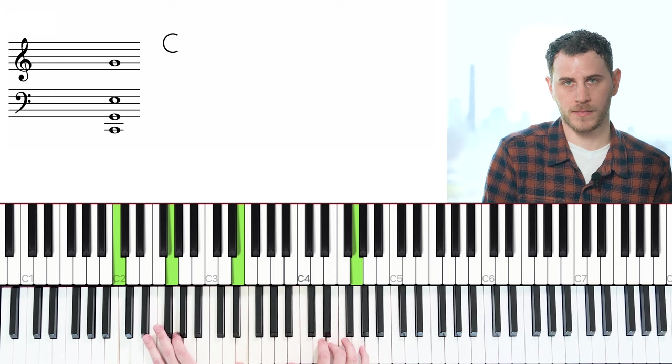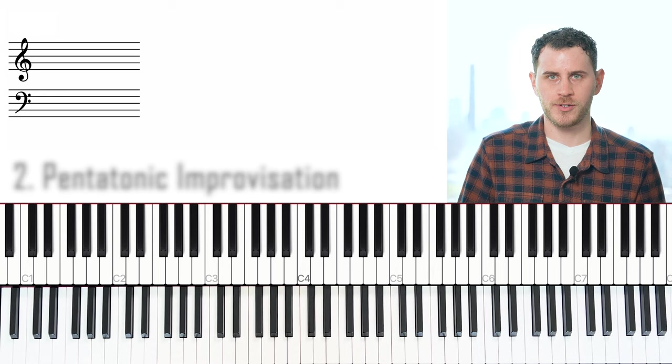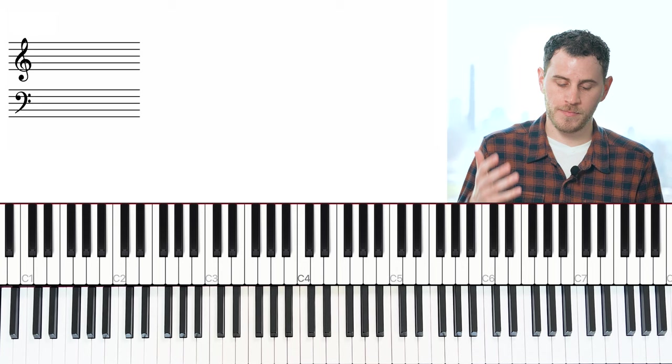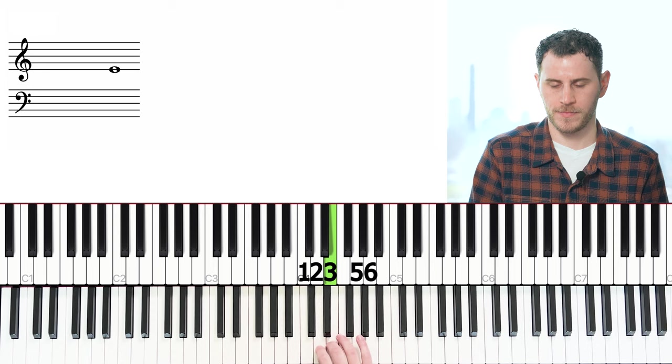Alright, style number two is pentatonic improvisation. Pentatonic improvisation comes from the pentatonic scale, which is just a five note scale. The major scale being just one, two, three, five, six. That is just a simple major pentatonic scale.